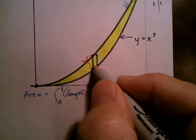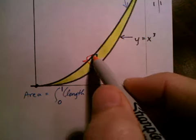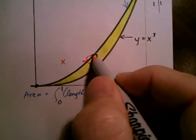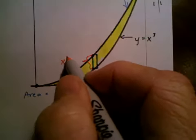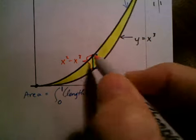which would be the length of the rectangle, would be just what we just talked about. The top minus the bottom. And the top minus the bottom, the top curve, doesn't matter what x, it's the top function, x squared, minus the bottom function, x cubed. So that's the length.